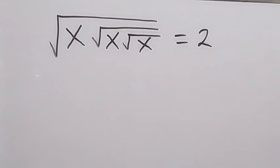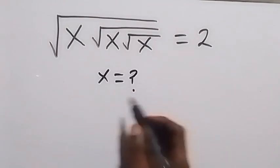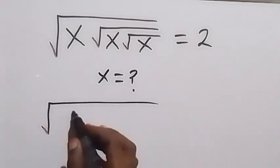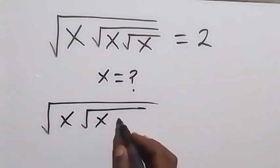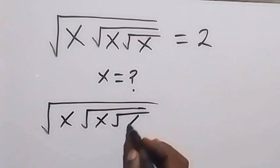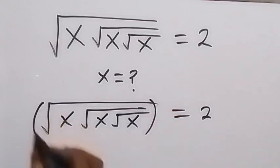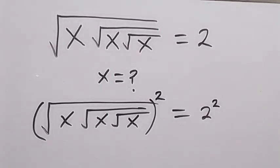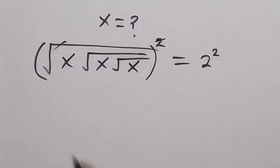Hello, you are welcome. We are finding the value of x. We have the square root of x times the square root of x inside, then equals 2. Let's square both sides — we square this side and also this side. The square cancels the square root, and this becomes x root x root x equals 2 squared.